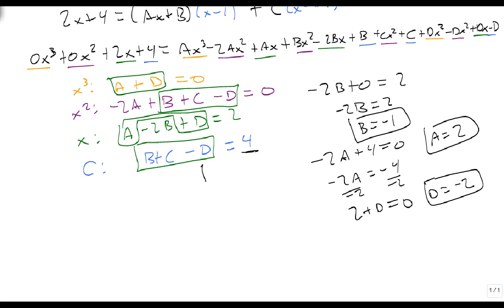So then I'm just going to take this equation here. I'm going to get b, plus c, minus d, equals 4. So minus 1, plus c, plus 2, c plus 1, equals 4. And that means c is 3.